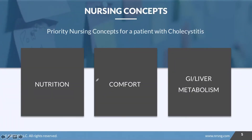Our top priority nursing concepts for a patient with cholecystitis are: nutrition, because they'll have difficulty with digestion, may be NPO, and will need diet adjustments; comfort, because this condition is really quite painful; and GI and liver metabolism, because if we don't address this, it can cause a backup and damage to the liver. Make sure you check out the care plan attached to this lesson to understand the interventions and rationales.